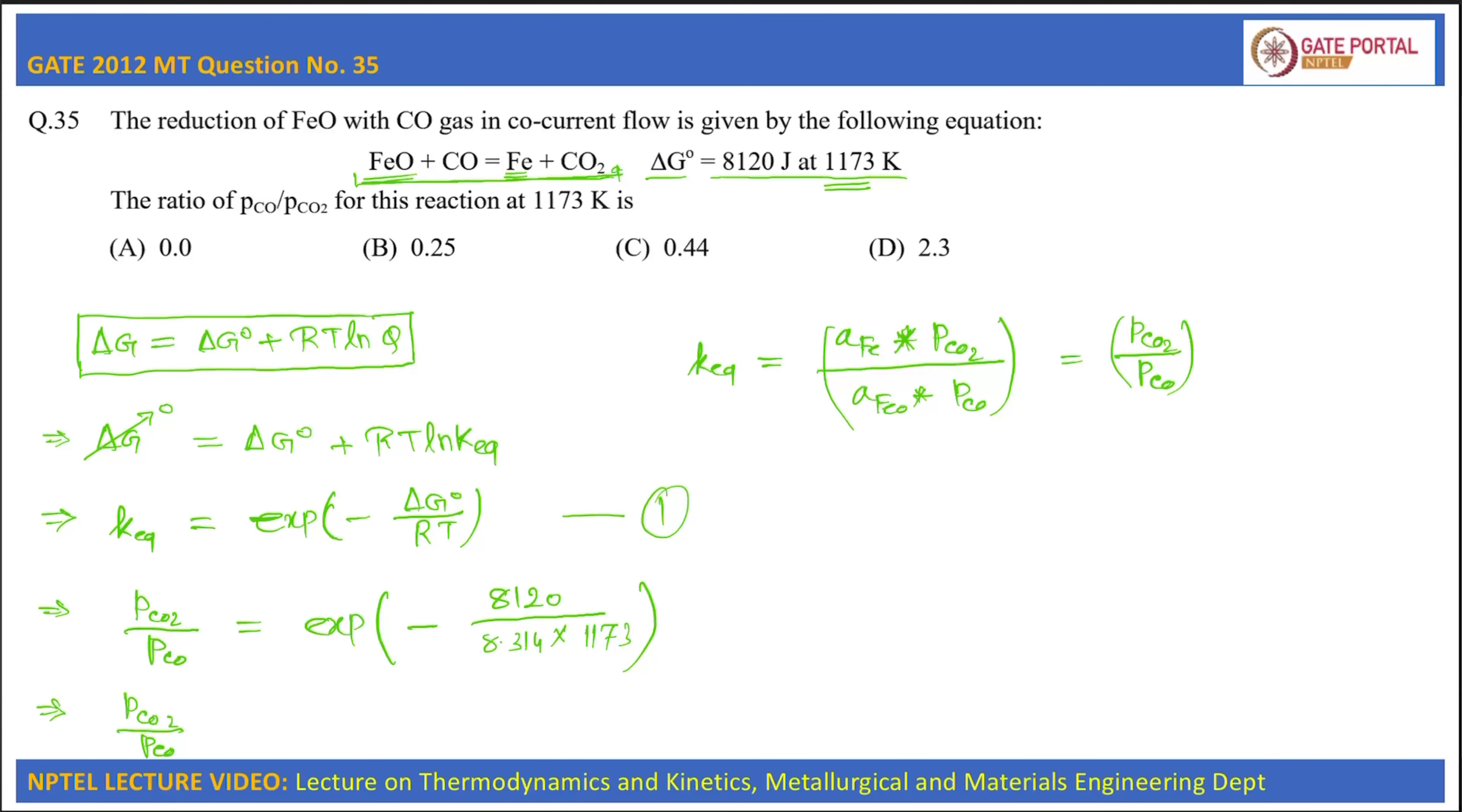Now if we calculate this, we will get PCO2 by PCO is equal to 0.434. Now in this question it is asked to calculate the ratio of PCO by PCO2.